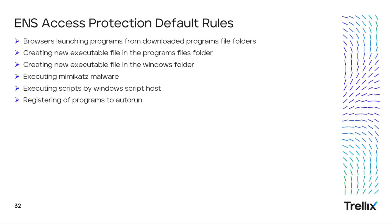Last but not least, let's look at ENS access protection default rules. First rule: browsers launching programs from downloaded program files folder — protecting from MITRE techniques user execution malicious link and malicious file. Create new executable files in program folders, as well as create new executable files in the Windows folder — for lateral tool transfer, MITRE technique T1570. Executing Mimikatz malware — for OS credential dumping, including LSASS memory, security account manager, NTDS, and cache domain credentials. Executing scripts by Windows scripting host — related to command and script interpreter MITRE techniques including PowerShell, VBScript, command shell, and JavaScript. And registering of programs to auto runs — MITRE technique boot or logon auto start execution.